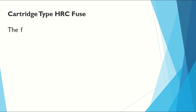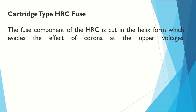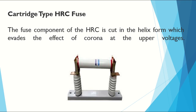Cartridge type HRC fuse. The fuse component of an HRC fuse is cut in a helix form, which eliminates the effect of corona at higher voltages. This type of cartridge HRC fuse can be found in substations.